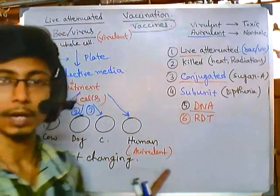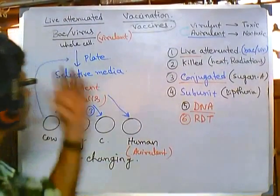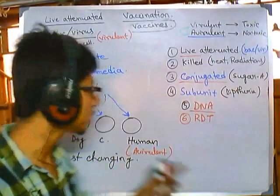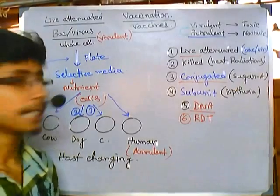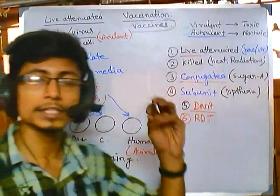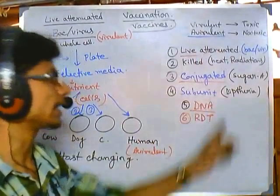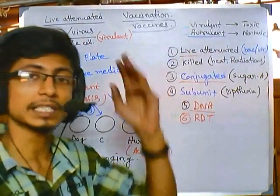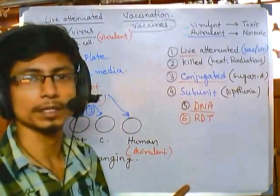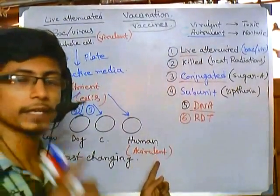Host switching is the most important part of live attenuated vaccine preparation. We need to take a whole cell and repeatedly go through this process. It is a pretty tedious and long procedure, but once we generate this vaccine, the immune activation is very strong because they are live. The immune response triggered by live attenuated vaccines is the highest compared to any other kind of vaccine, because we are using real, live, whole bacteria that behave like the virulent form but simply won't cause harm.